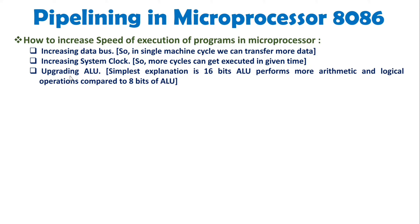Next is by upgrading the ALU. For example, in 8086 we have a 16-bit ALU, whereas with 8085 we have an 8-bit ALU. If you want to perform 16-bit addition with 8085, it will take several instructions, but that can be done directly with a 16-bit ALU. So by upgrading the ALU of a microprocessor, you can increase the speed of execution.